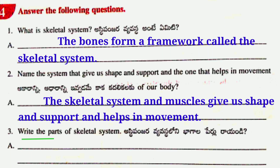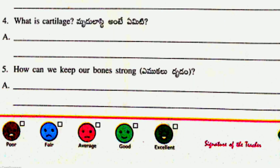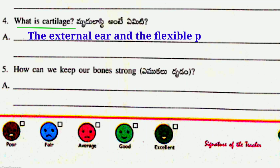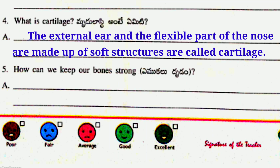Third question: Write the parts of our skeletal system. Answer: Skull, Ribcage, Backbone, and Bones make up the skeletal system. Fourth question: What is cartilage? Answer: The external ear and the flexible part of the nose are made up of soft structures called cartilage.